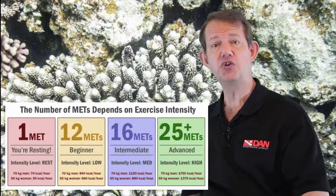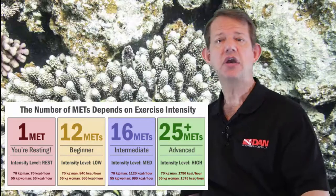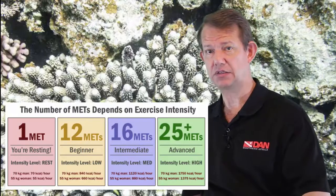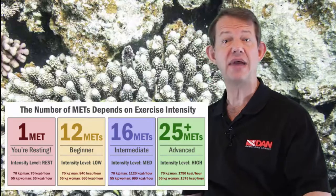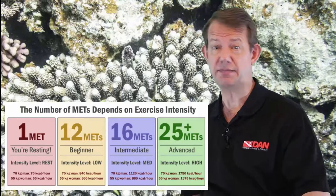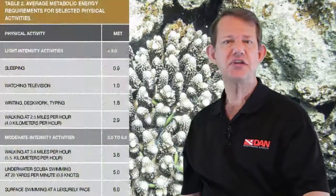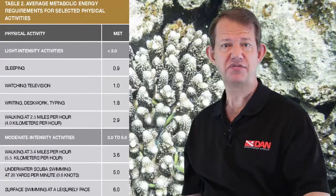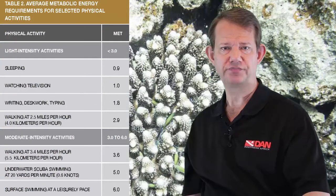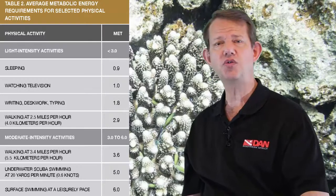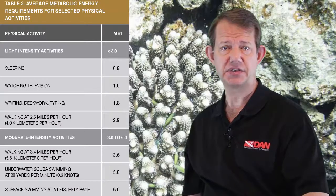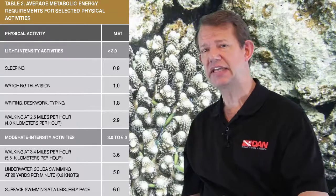An individual of average fitness can achieve about a 12-fold increase in metabolic rate — in other words, 12 METs. In top athletes, this can exceed 20 METs. The table here indicates the various METs associated with different levels of activities, and records the average metabolic energy requirements for selected physical activities, using METs as the indication.